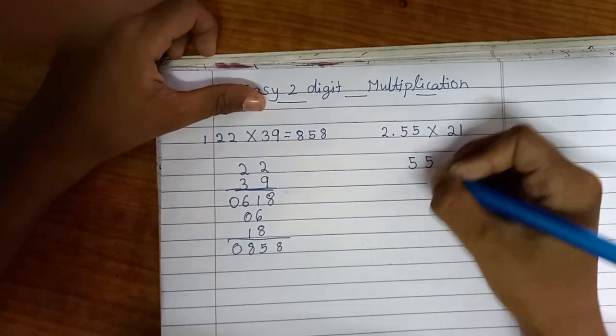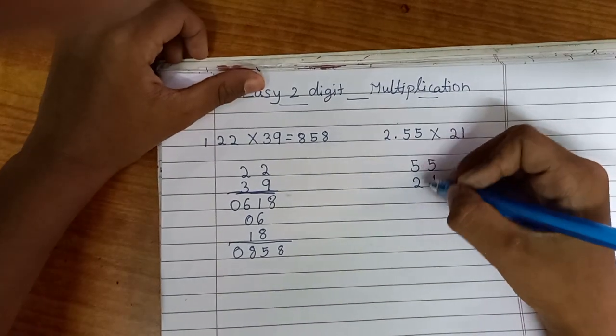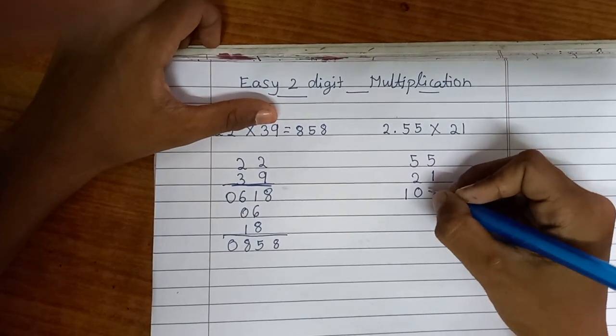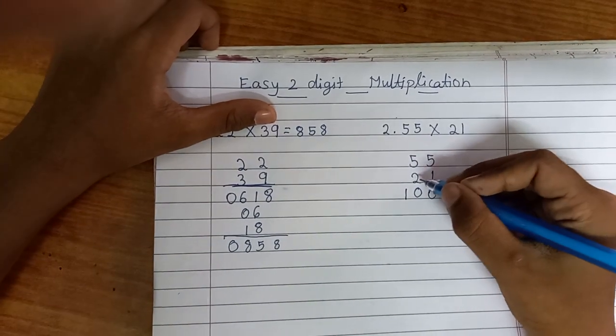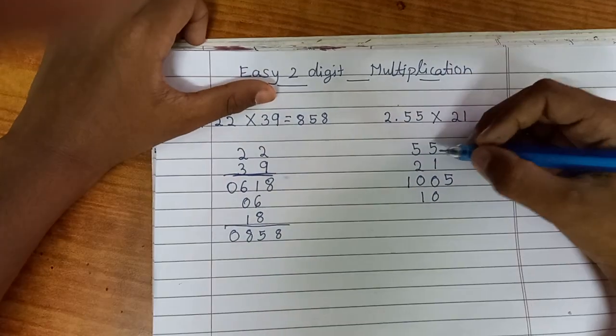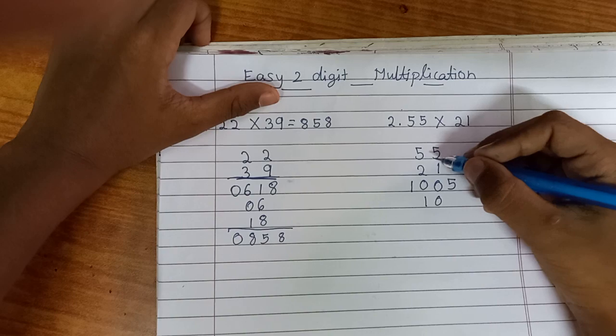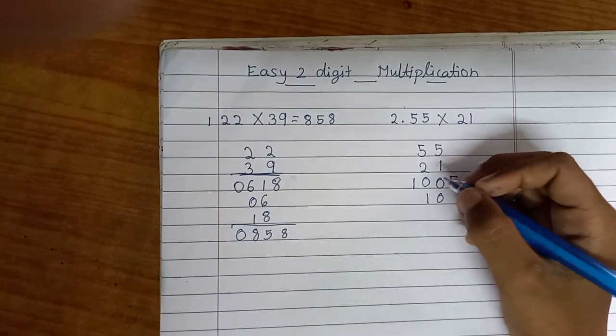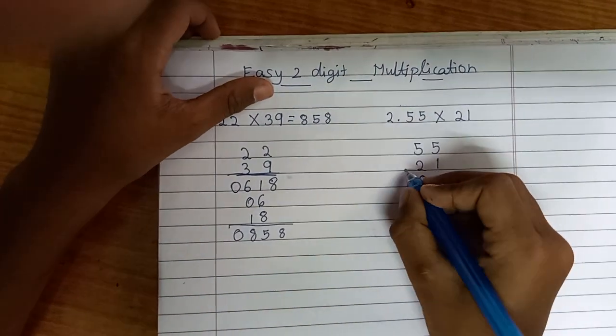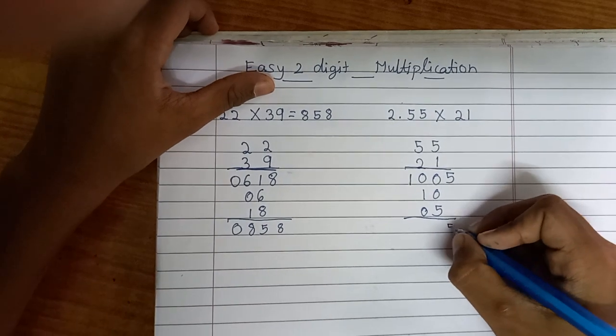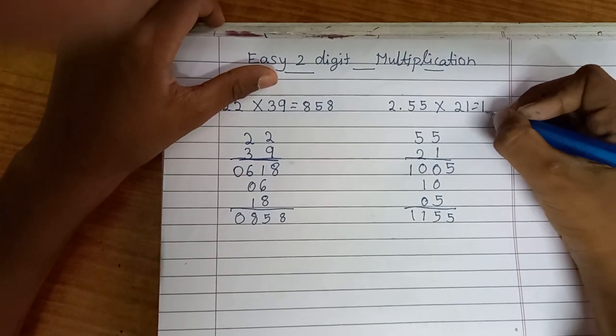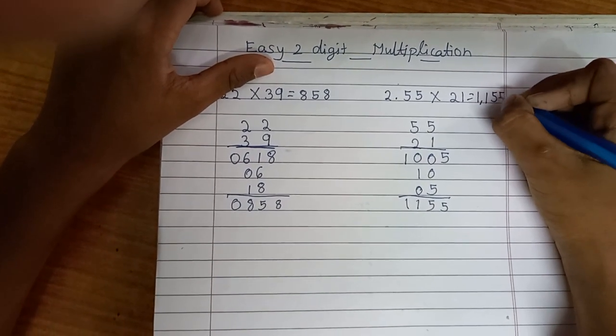55 times 21. Now 5 times 2 is 10. Then 5 times 1 is 5. Then 5 times 2 is 10. Then again 5 times 1 is 5. So we have 5, 5, 1, 1. The answer is 1155.